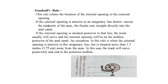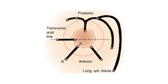An exception to Goodsall's rule: when the external opening is anterior to the imaginary line but situated more than 1.5 cm (i.e., 3.75 cm) away from the anal ring, the tract will curve posteriorly and end at the 6 o'clock position in the anal canal. Here is a picture showing Goodsall's rule with a dotted line showing the transanal midline anteriorly and posteriorly. If the external opening is within a 3.5 cm circle anteriorly, it opens straight into the anal canal. If posteriorly, regardless of whether it is inside or outside the circle, it always opens at the 6 o'clock position.